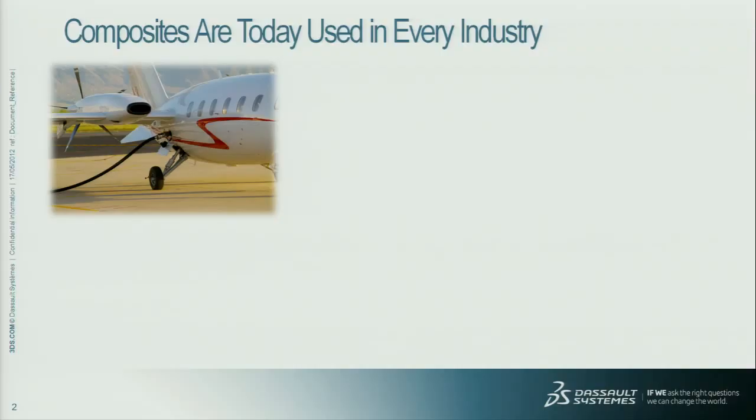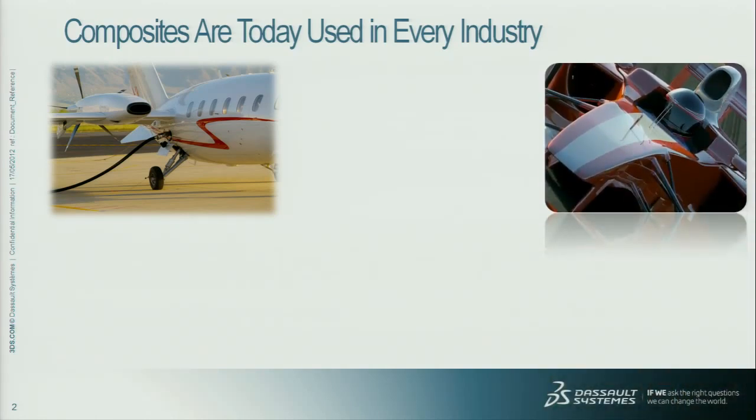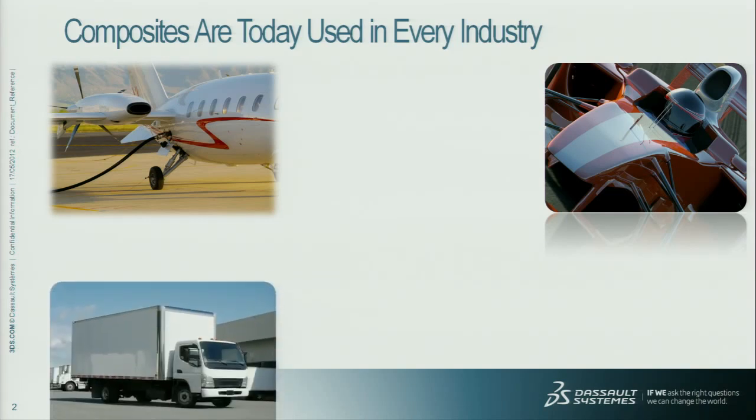Everyone knows that composites are used a lot in the aerospace industry, a lot in racing and motorsports. But composites are used today in the transportation industry. The bottles of water we all drink — the main cost to get them to the store is transportation. Trucks often weight out before they volume out, meaning they're about 40% full of pallets of water, the rest is wasted space. So they're using composites to make that trailer lighter so they can get another pallet of water on the semi.